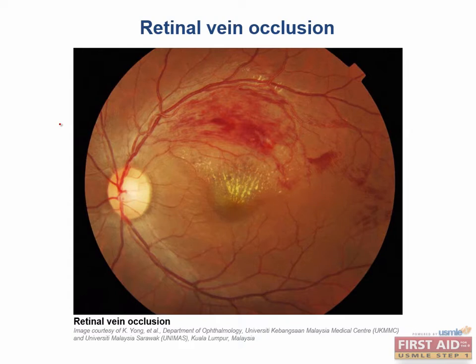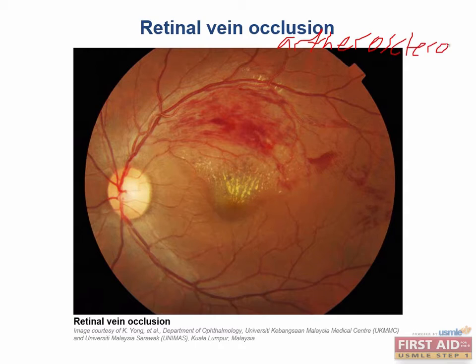Retinal vein occlusion is self-explanatory. It is blockage of retinal veins and can occur in the central vein or in one of its branches. This usually develops secondary to arterial atherosclerosis, which then results in the compression of the surrounding veins.